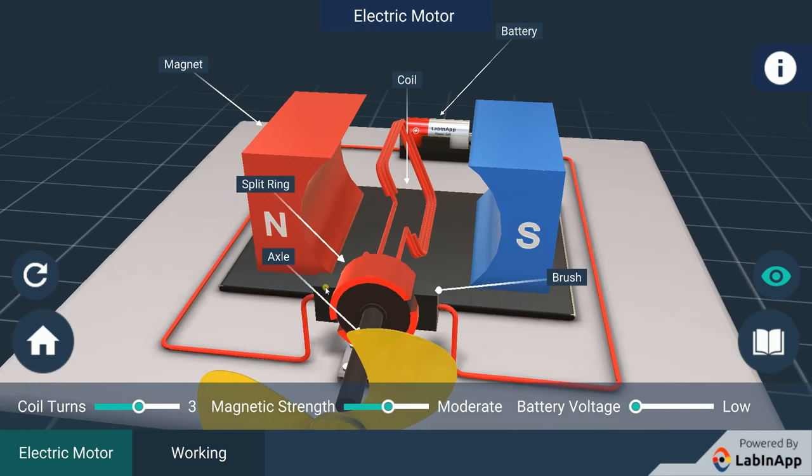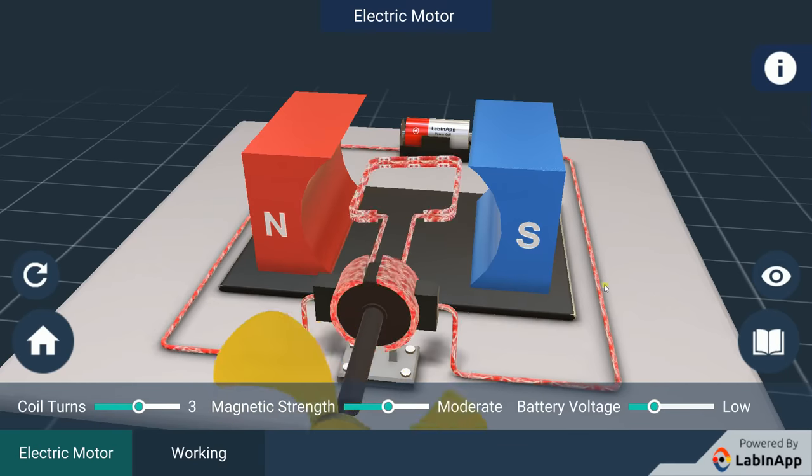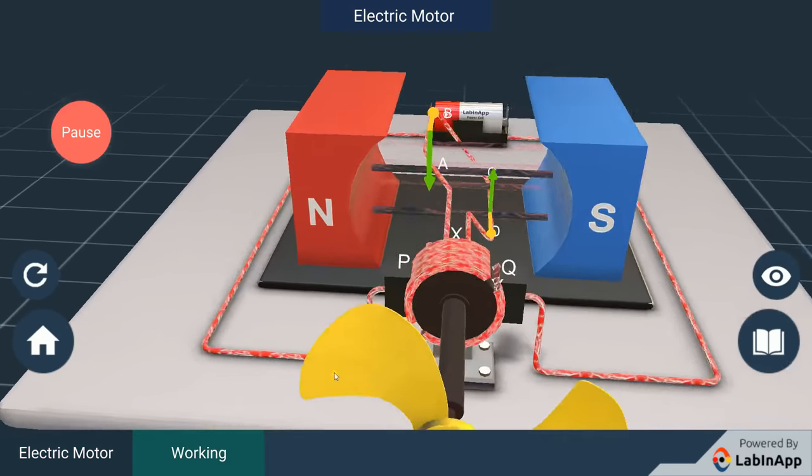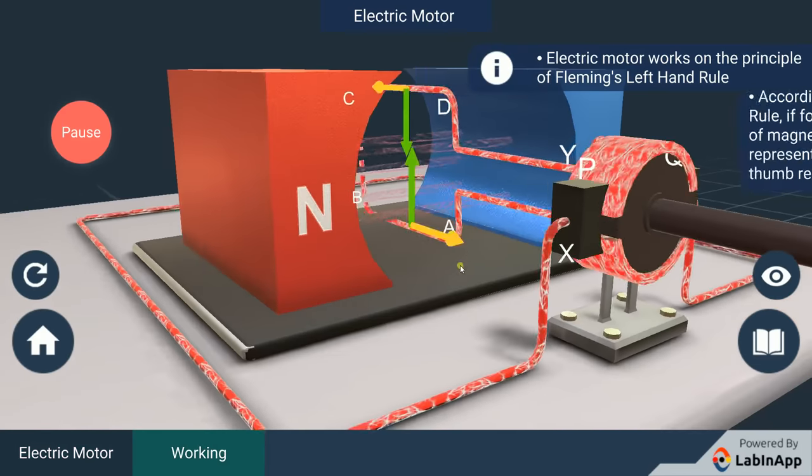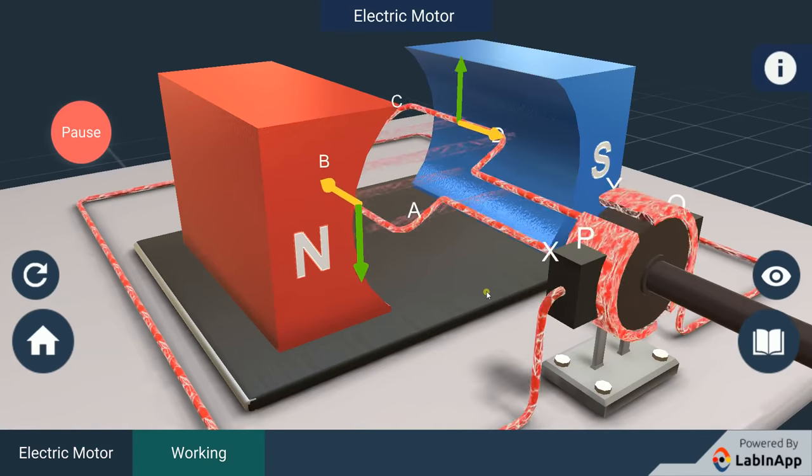Current in the coil enters from the source battery through conducting brush and flows back to the battery through the other brush. When we apply Fleming's left-hand rule to find the direction of the force on a current carrying conductor in a magnetic field...